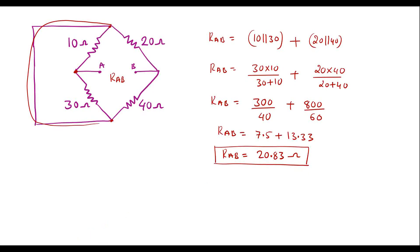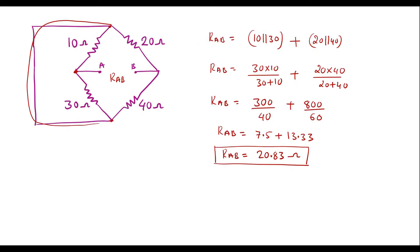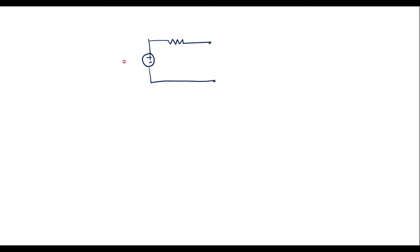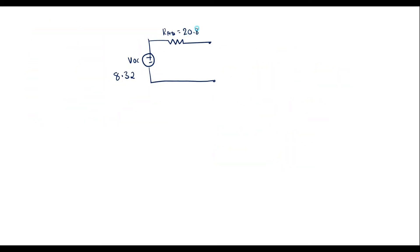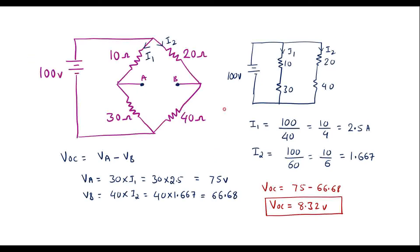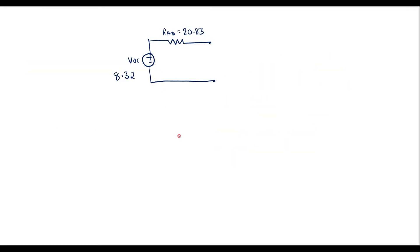Now let me draw the Thevenin's equivalent circuit. The Thevenin's equivalent circuit consists of VOC in series with RTH. VOC is already calculated; its value is 8.32 volts. The resistance between terminal A and B is 20.83 ohms. In maximum power transfer theorem, the load resistor that was removed at the beginning should now be reconnected, so connect RL here.